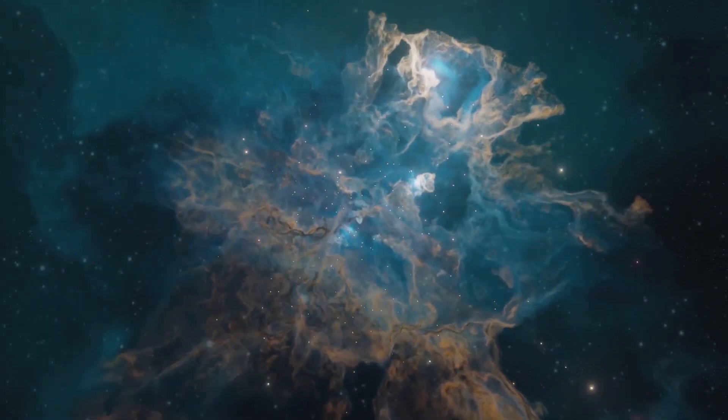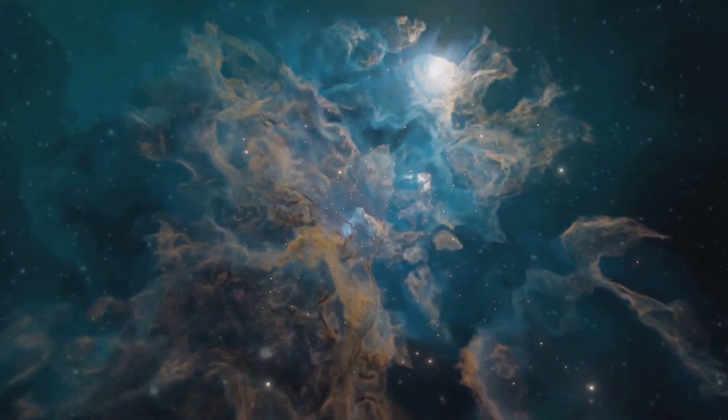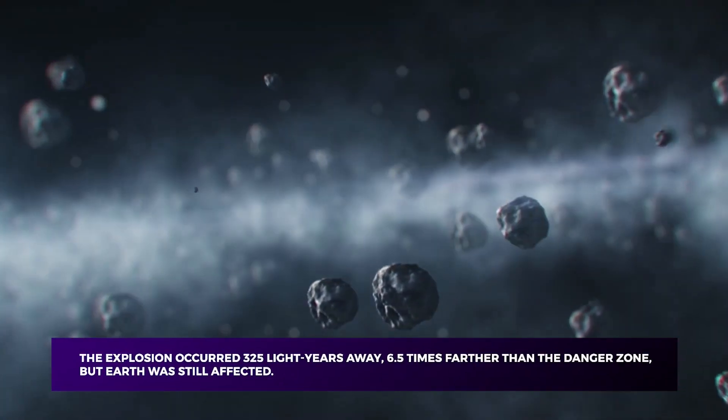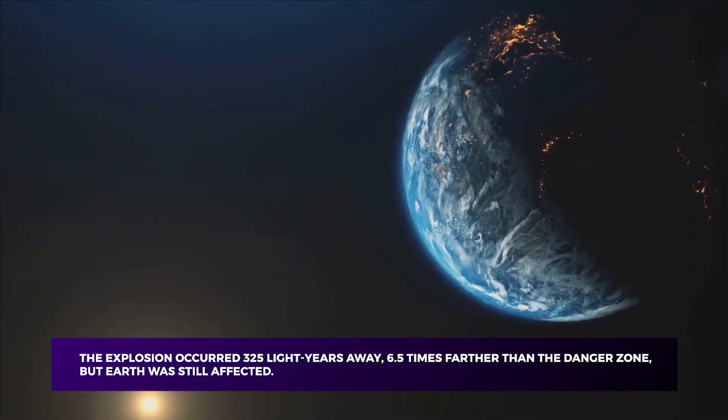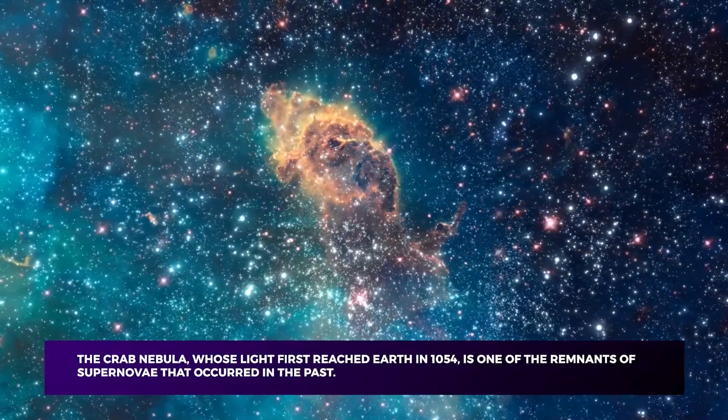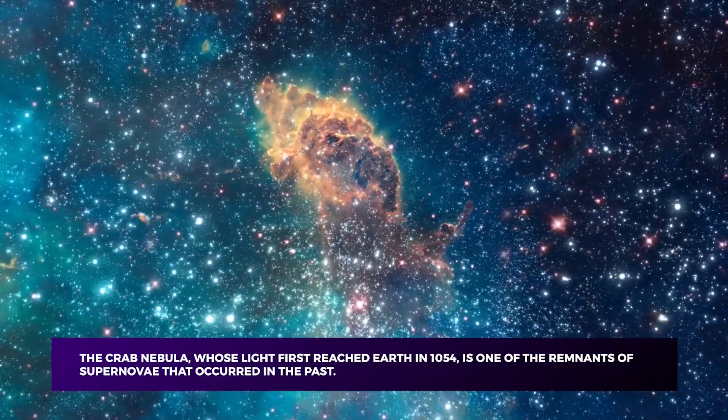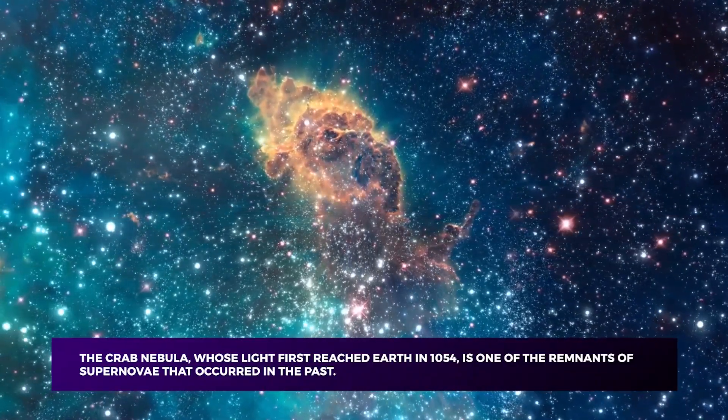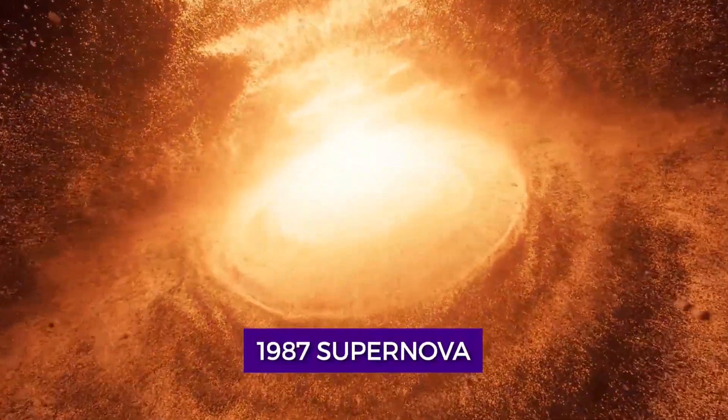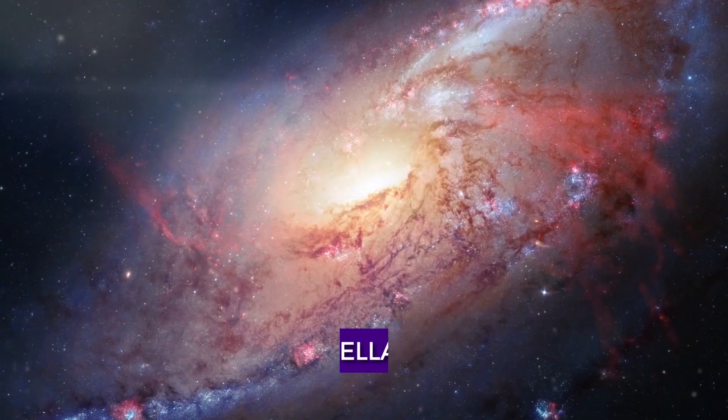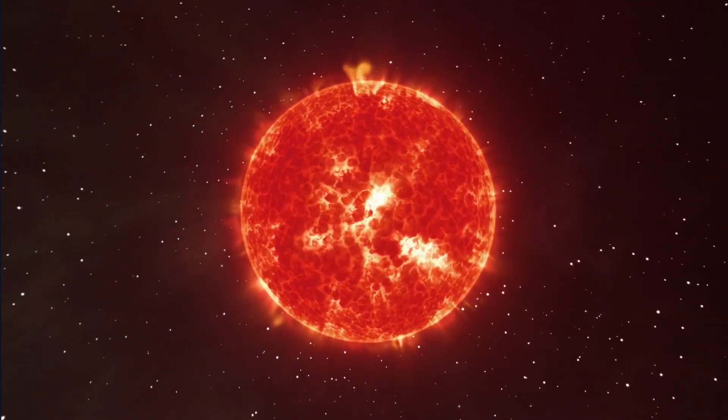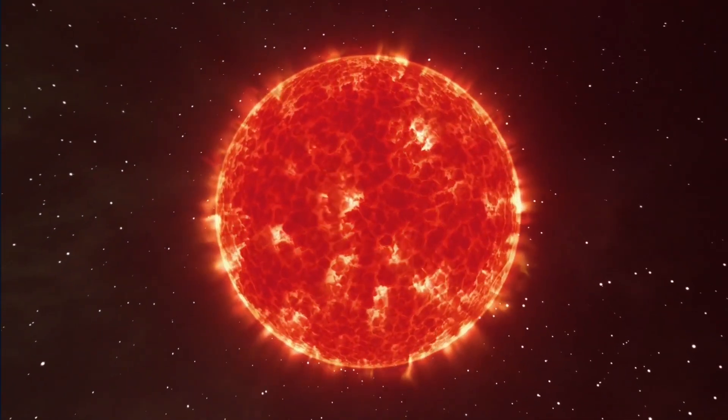The last time Earth felt the effects of a supernova was about 1.7 to 3.2 million years ago. The explosion occurred 325 light-years away, six and a half times farther than the danger zone, but Earth was still affected. Some iron from the star's core reached our planet, and it can be found on the ocean floor. The Crab Nebula, whose light first reached Earth in 1054, is one of the remnants of supernovae that occurred in the past. The most recent supernova observed in our galaxy was the 1987 supernova visible from Earth. It was located in the Large Magellanic Cloud, a tiny partner galaxy of the Milky Way. But the nearest red supergiant star to Earth that is preparing for an explosion is Betelgeuse.